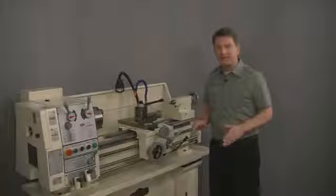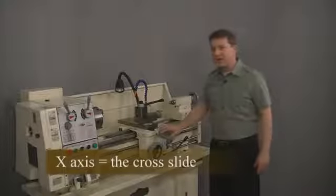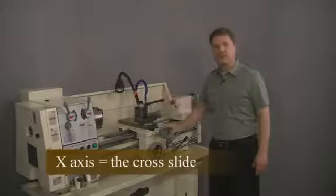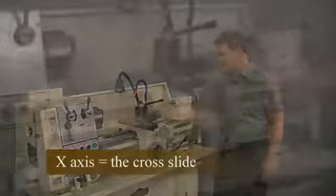The X axis is also known as the cross slide and consists of a dove-tailed platform moving front to back across the saddle of the lathe like this.